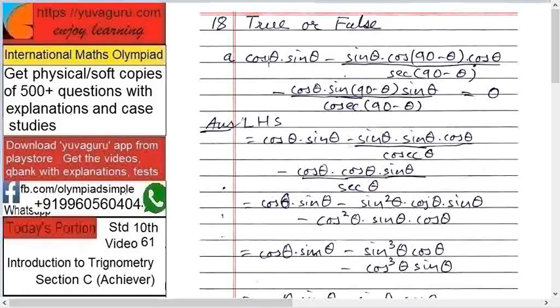Let's start. First one: cos theta sin theta minus sin theta into cos of 90 minus theta into cos theta, the whole upon sec of 90 minus theta, minus cos theta into sin of 90 minus theta sin theta upon cosec of 90 minus theta equals 0. We have to find whether this is true or false.